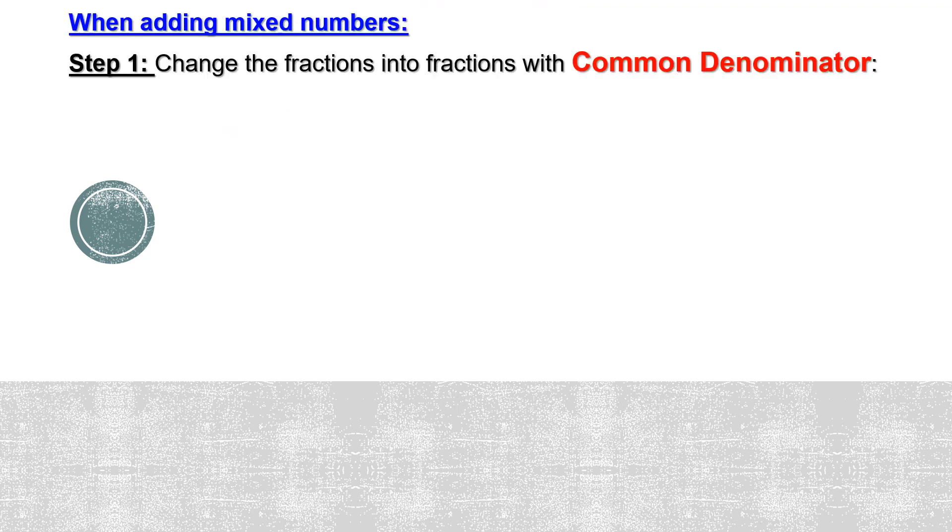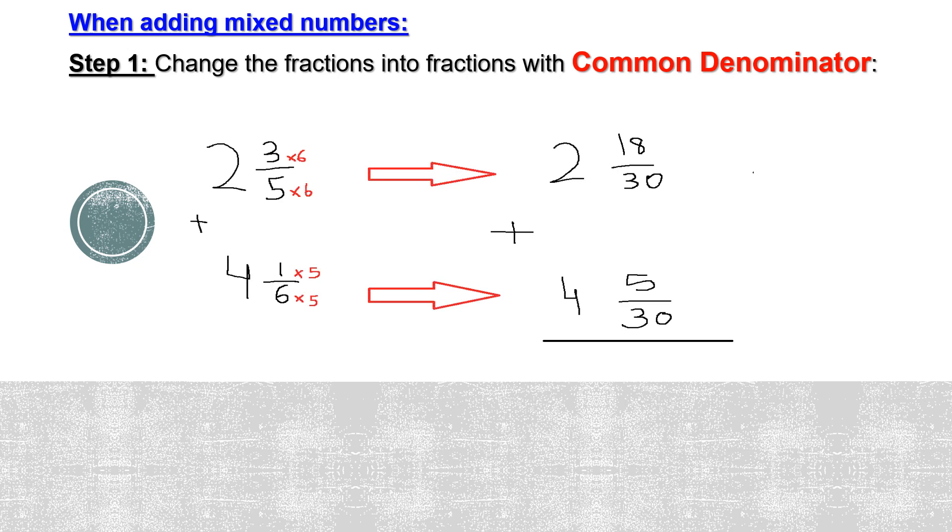Okay, now let's add the above mixed numbers. 2 and 3 over 5 plus 4 and 1 over 6. The first step is to change the fractions into fractions with common denominator, exactly like the way we did in our first lesson.